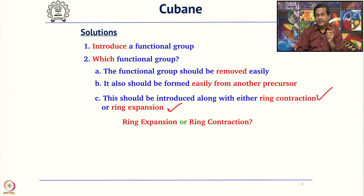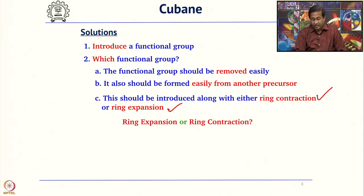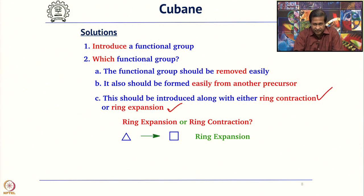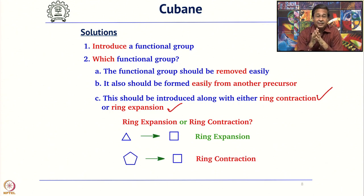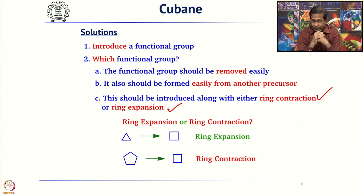The next question is whether you want ring expansion or ring contraction — which one is better? Ring expansion means starting with a three-membered ring and going to four-membered. For ring contraction, you start with a five-membered ring and end up with a four-membered ring. These are two options.